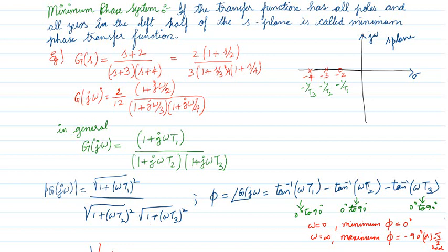Now we move to another type of system called the minimum phase system. If a transfer function has all poles and zeros in the left half of the S plane, then it is called a minimum phase transfer function. All poles and zeros should be in the left side.